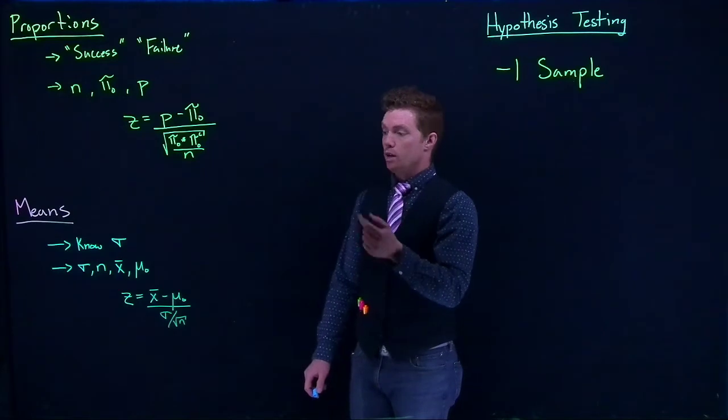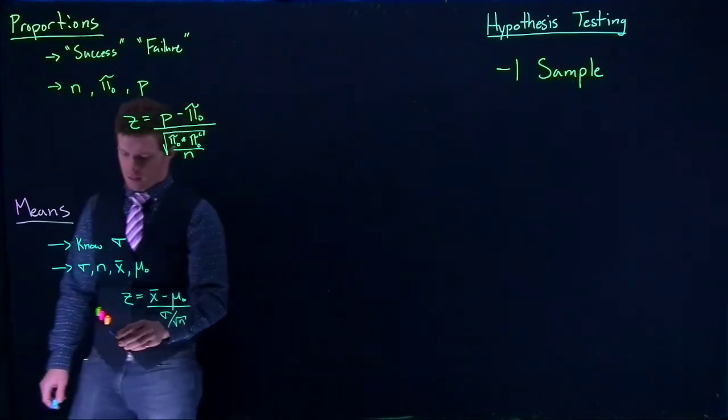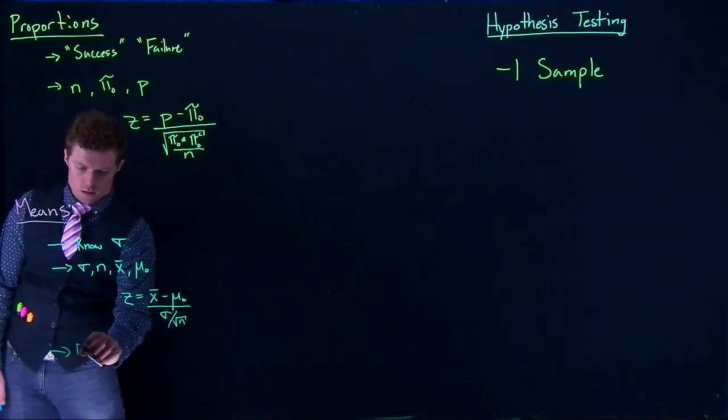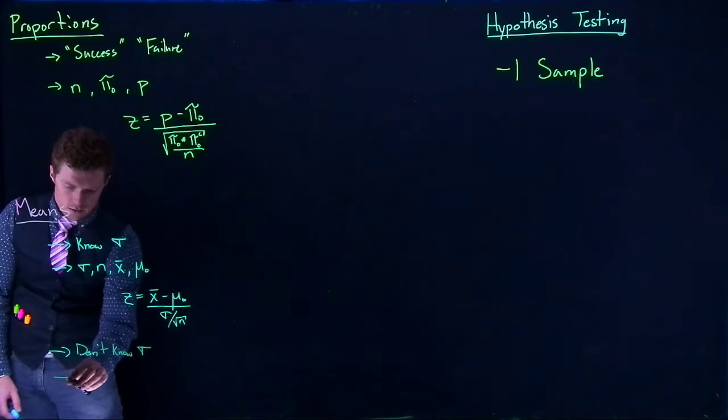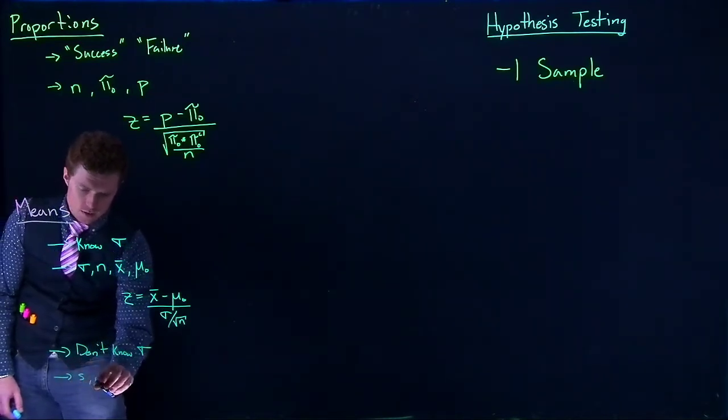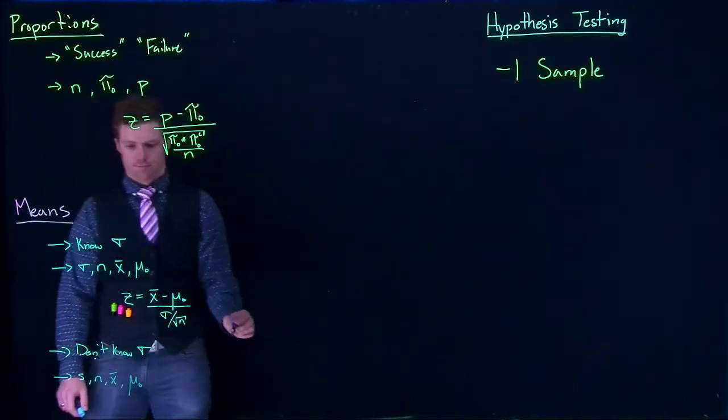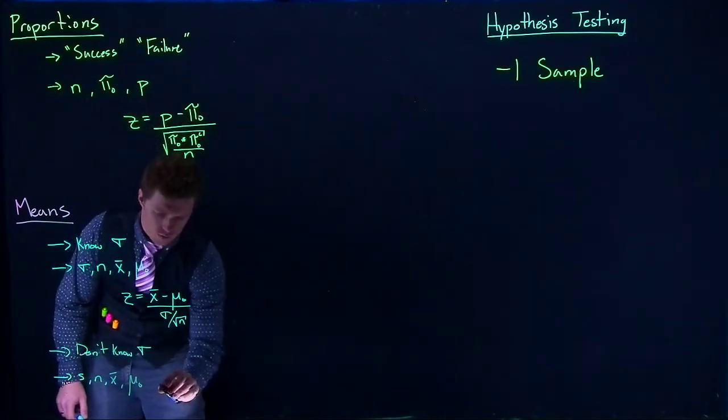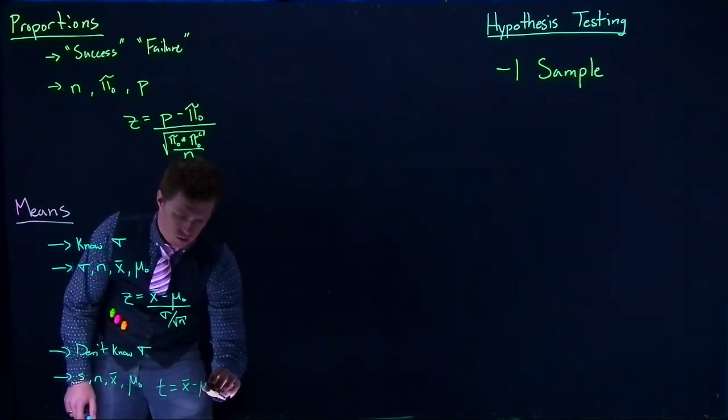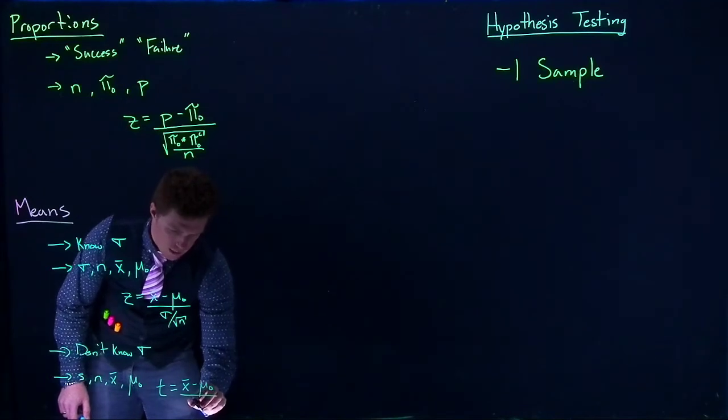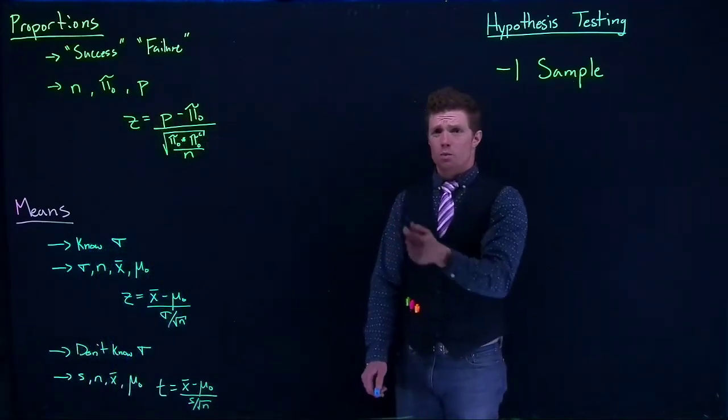Alright, so that's if we know sigma. This is a pretty rare case actually though. Most of the time we have no idea what sigma is. So we don't know. And if that's the case, then the variables that we do know, they're going to be s and x bar and mu naught. And then the equation that we're going to be using for our test statistic is going to be this t equation, x bar minus mu naught divided by s divided by the square root of n. Alright, so we should be familiar with those equations.